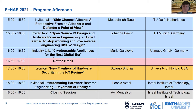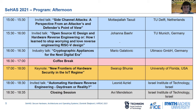In the afternoon session, continuing at 3 o'clock, we have invited talks and an industry talk on cryptographic appliances, followed by a coffee break. Our second keynote speaker today is Professor Svarabunia from the University of Florida, and we finish with an invited talk and a closing session from Professor Avi Mendelssohn. Note that two sessions were swapped due to scheduling conflicts — the second keynote is now at 5 o'clock, not 3 as previously mentioned. Also, all time slots include some minutes for Q&A, so please keep that in mind when presenting.